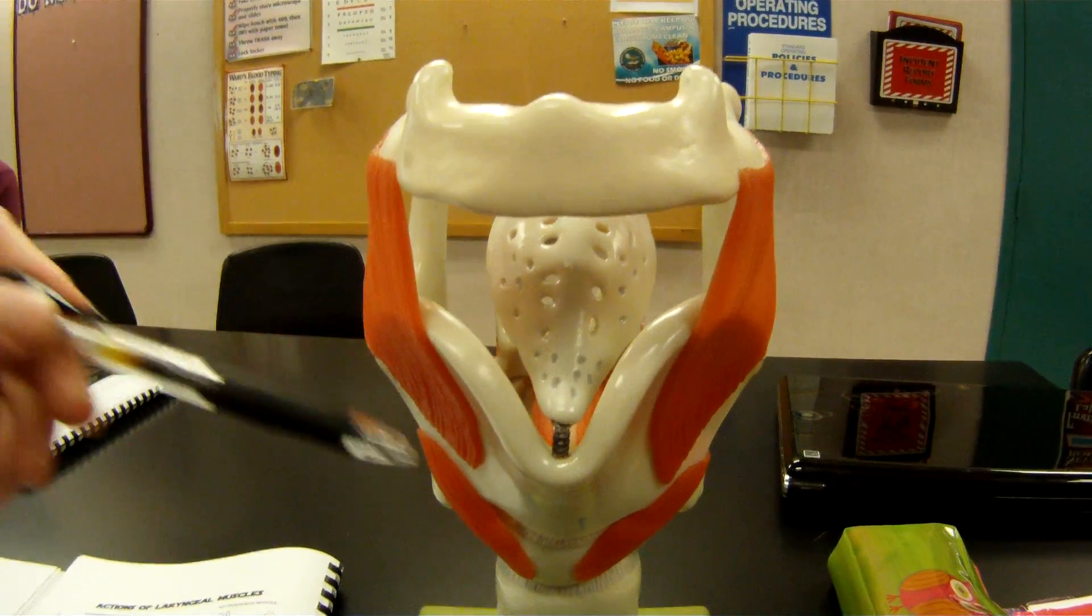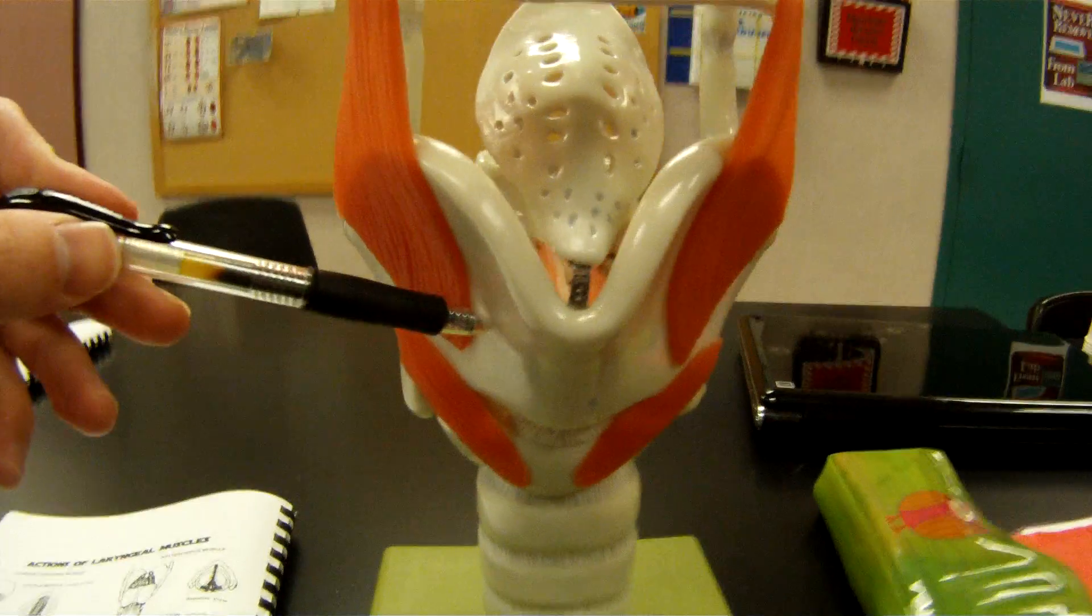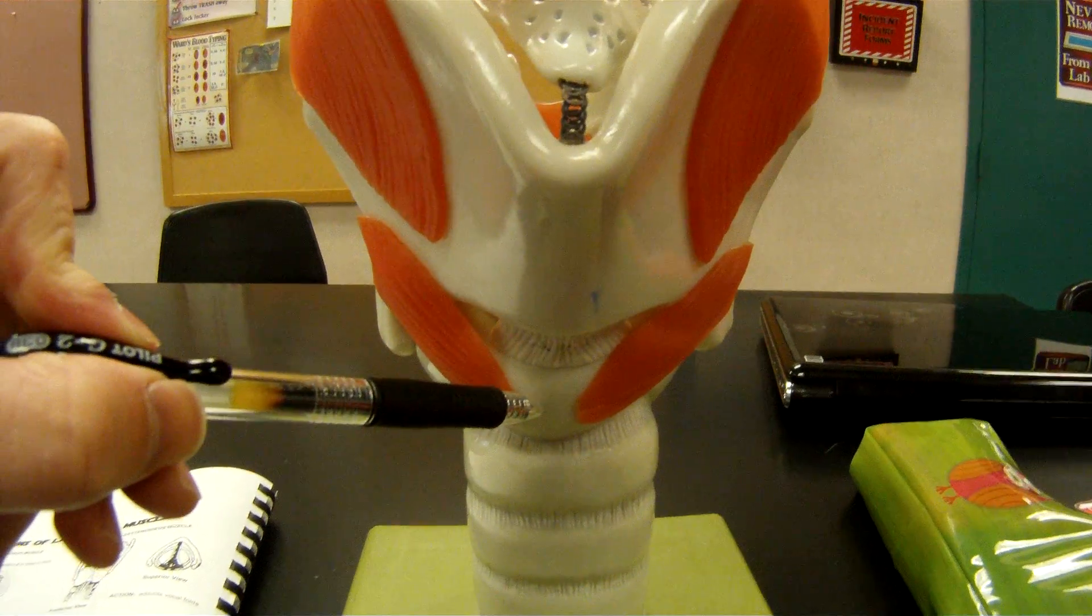You have hyoid bone, thyroid cartilage, and cricoid cartilage.